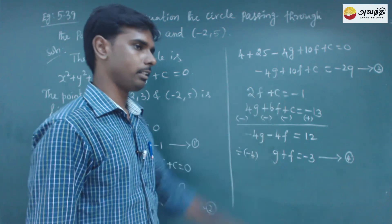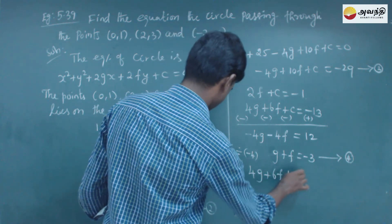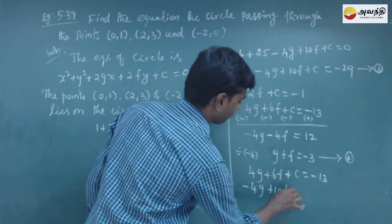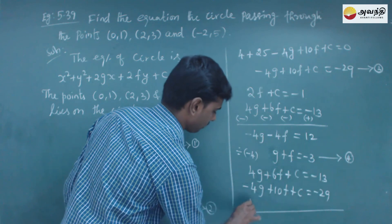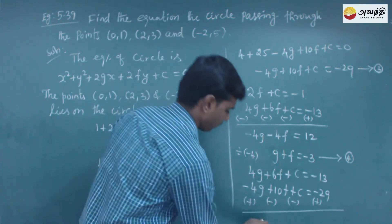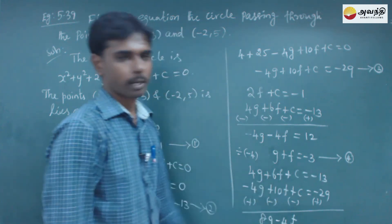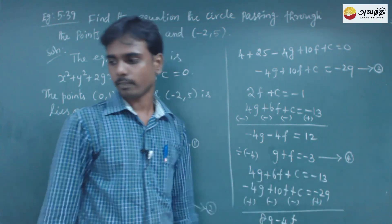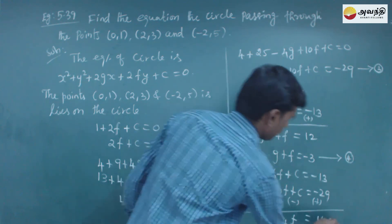Subtracting equation 3 from equation 2: equation 2 is 4g plus 6f plus c equals minus 13, and equation 3 is minus 4g plus 10f plus c equals minus 29. Subtracting gives 8g minus 4f equals 16. This is equation number 5.